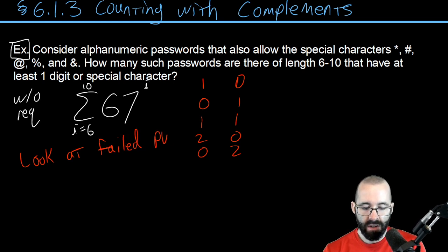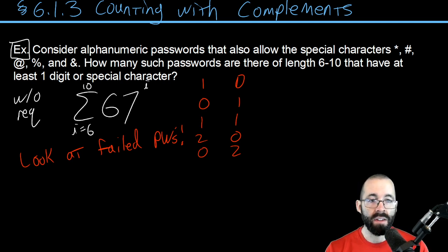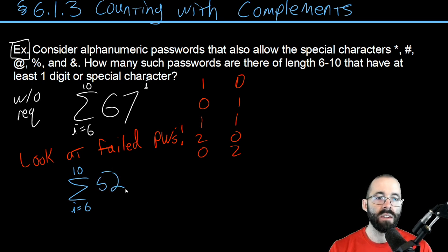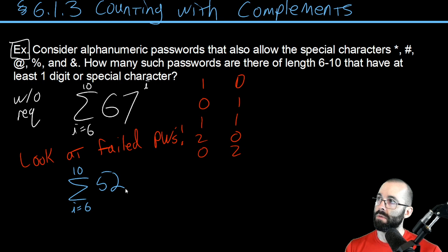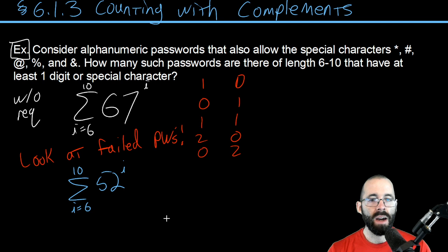So let's look at the failed passwords. Failing the requirement is going to be length six to ten, so again it's also going to be adding up just like this, but now no numbers, no special characters—just the 52 letters. 26 letters capital or not capital, we'll just add them up. 52 to the sixth plus 52 to the seventh plus 52 to the eighth—that's summation notation.